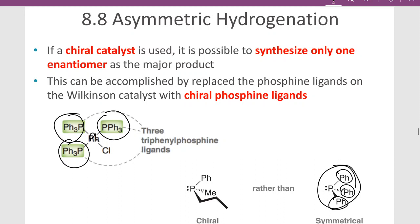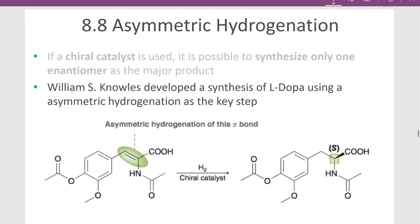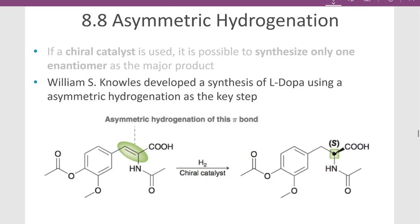But if we use a ligand that has different groups attached, then that ligand itself will be chiral because it's locked into this conformation. If it's attached to the ruthenium, it will create a chiral catalyst. This chiral catalyst can preferentially create one chiral center over the other. In this example, William Knowles synthesized L-DOPA using an asymmetric hydrogenation as the key step.